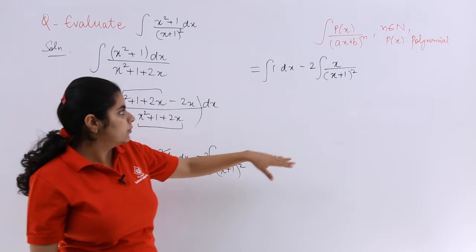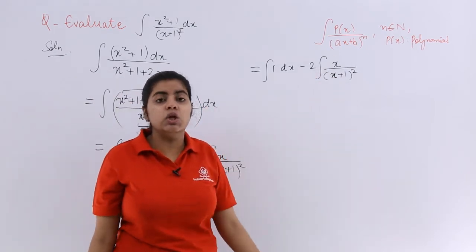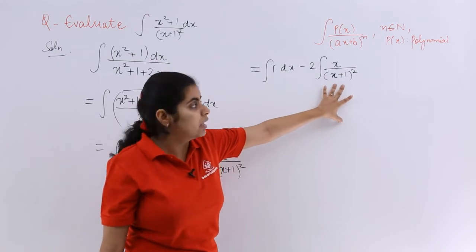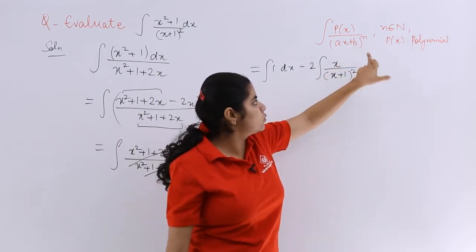But now again see, can we simplify directly? No. What is in the denominator? x + 1. See, ax + b raised to the power n, n is natural number. Here it is 2.